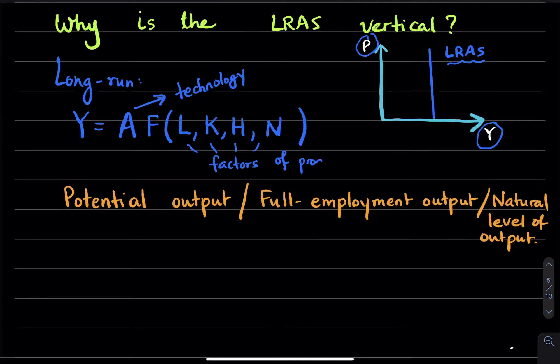In the long run, these factors are what determine real GDP. Any changes to any of these factors — whether it's technology, labor, physical capital, human capital, or natural resources — is going to change the long-run aggregate supply and make it shift.